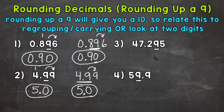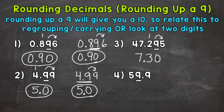Let's move on to number 3, where we have 47 and 295 thousandths. We're going to round to the nearest hundredth. We have the digit in the hundredths place underlined — it's a 9. Let's look to the right and we have a 5. 5 or more, we round up. If we round up a 9, we get 10. So let's put our 0 in the hundredths and then regroup or carry the 1. 1 plus 2 gives us 3 in the tenths place. So 47 and 295 thousandths rounds to 47 and 30 hundredths when we round to the nearest hundredth.